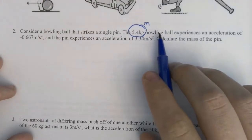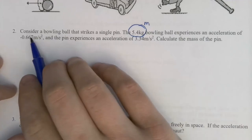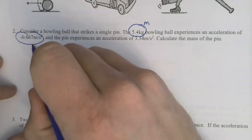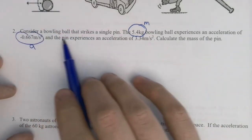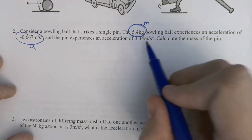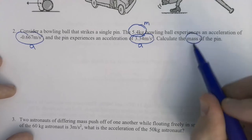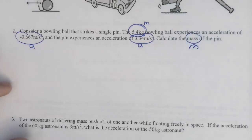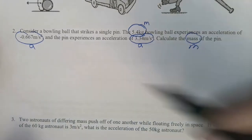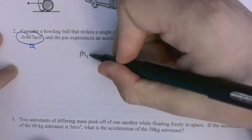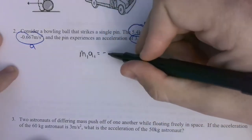So we've got M. We'll keep reading. The bowling ball has an acceleration of this. Well, that's acceleration then. The pin experiences an acceleration of 3.34. There's another acceleration. Calculate the mass of the pin. Like I said moments ago, if you've got two masses and two accelerations, you know that you're going to be using this equation.